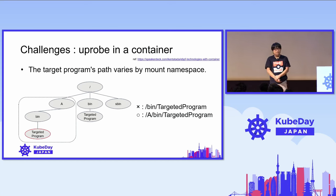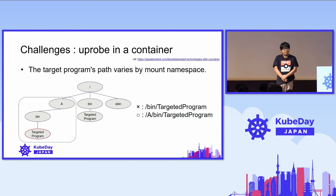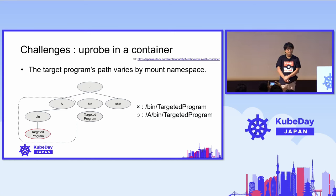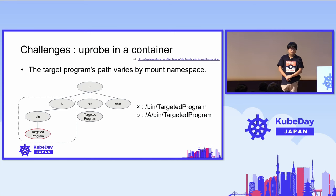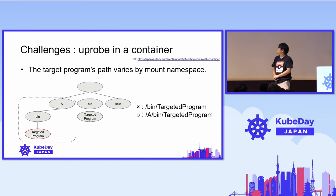I want to share one challenge example. One particular challenge is using uprobes in a container environment. The path of the target program is changed by the mount namespaces. So when you want to develop a tool using uprobes for your container environment, you need to care about the difference between the container and host environment. This means that the developer of eBPF tools needs to understand uprobes, the mechanism, mount namespaces, containers, and so on.